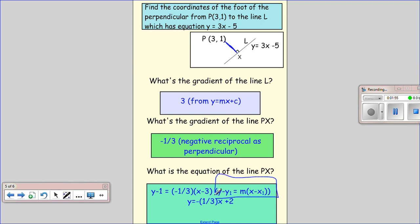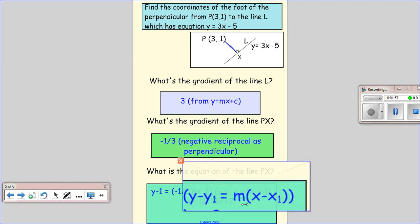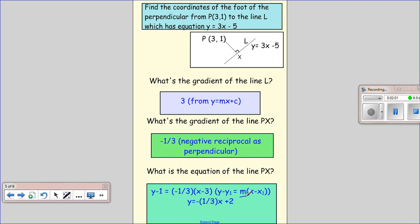Now we know these two lines are perpendicular, and we know there's a relationship between perpendicular lines: one gradient is the negative reciprocal of the other. So if I can find the gradient of this line, I already know the gradient of PX. What's the gradient of y=3x-5? Comparing it to y=mx+c where m is the gradient...